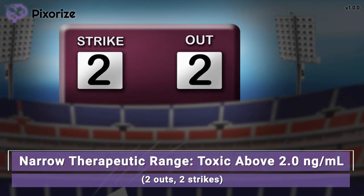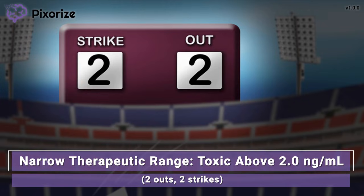This reminds me of Digoxin's therapeutic limit. Digoxin levels must not exceed 2 nanograms per milliliter. Digoxin is a drug with a notoriously narrow therapeutic range, between 0.5 and 2 nanograms per milliliter. This narrow range makes this a hard drug to use.